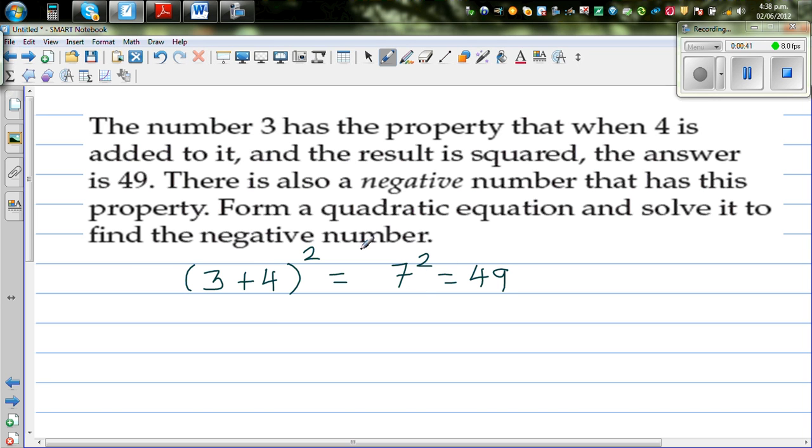Now, what they are saying is there is also a negative number which has the same property. That means a negative number plus 4 and then square it, you get 49. And you have to form a quadratic equation to get that. So it's not by trial and error. You can do it by trial and error, but they are expecting you to do a quadratic equation and then solve it.